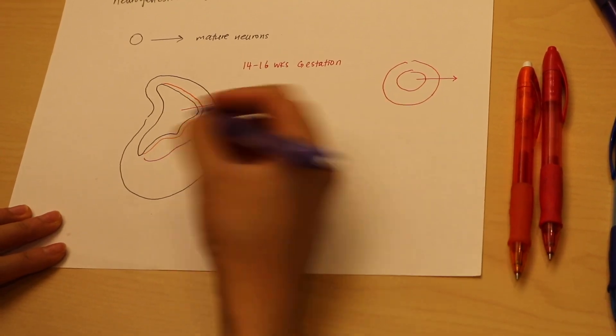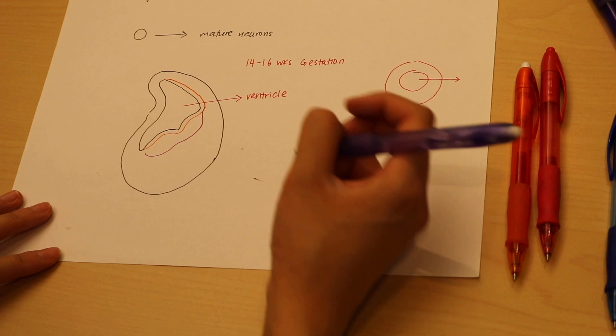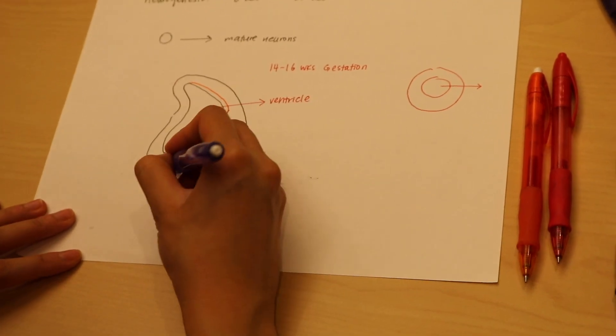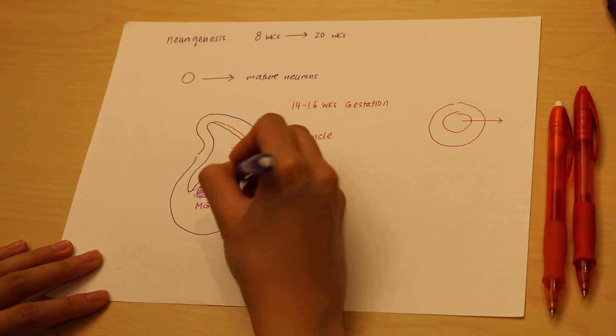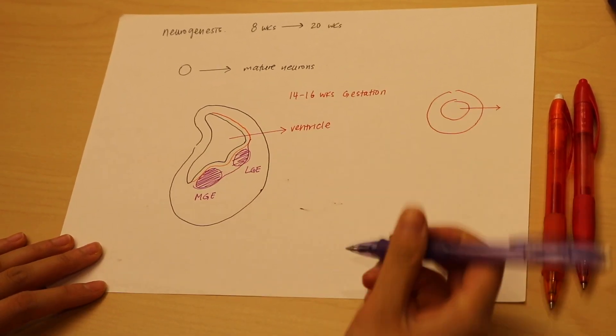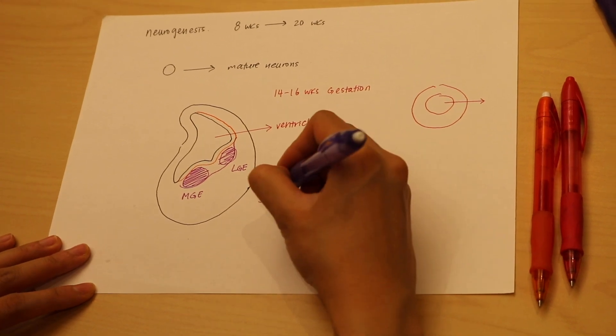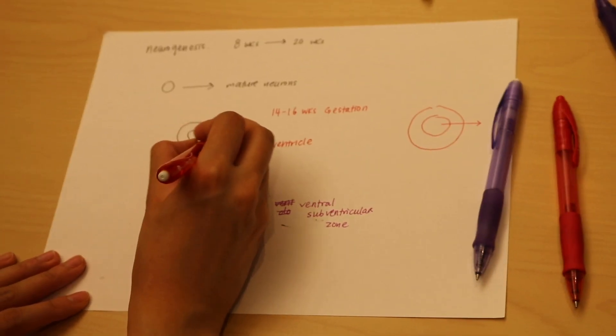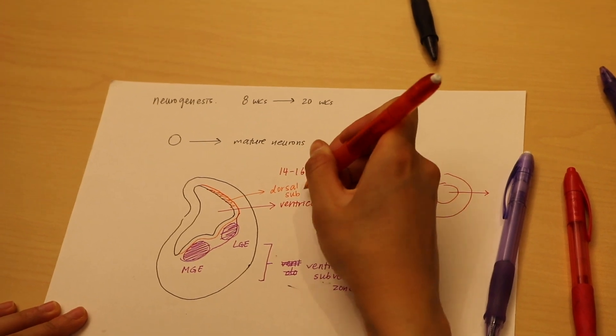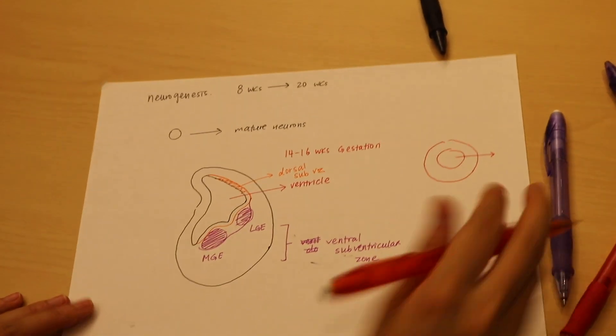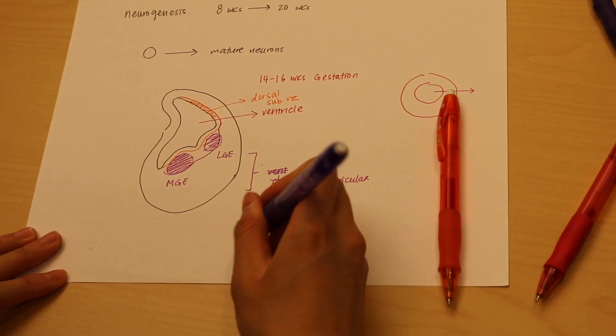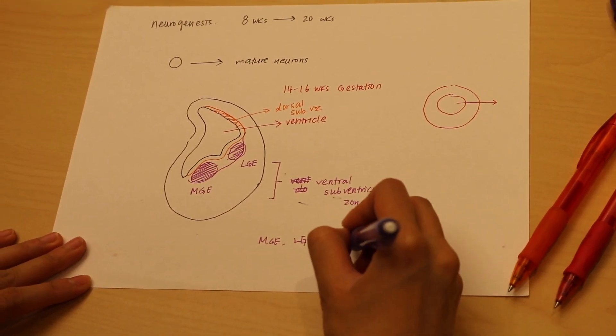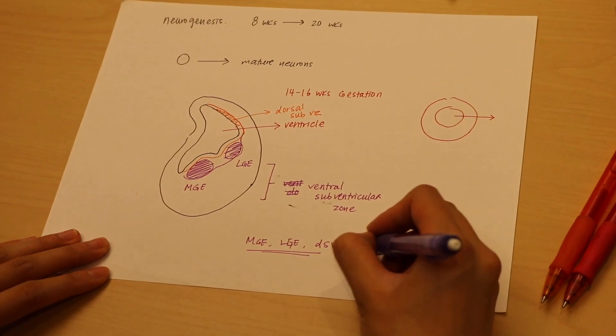From here, they can be subdivided into specific eminences. So here is the medial ganglionic eminence, and here is the lateral ganglionic eminence. Both these regions are part of our ventral subventricular zone. We also have populations of cells up here, and these are parts of our dorsal subventricular zone. All these regions—the MGE, the LGE...